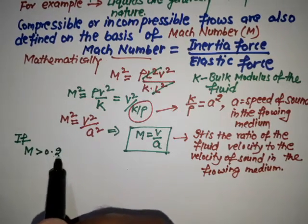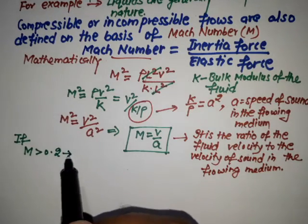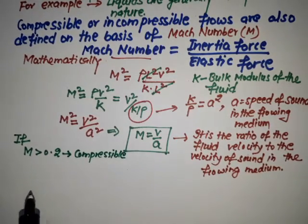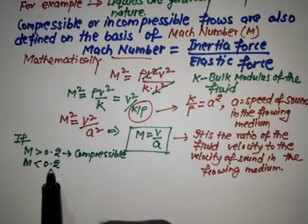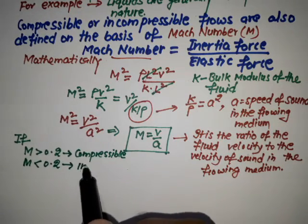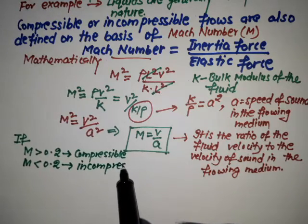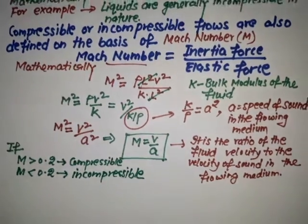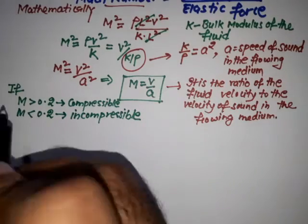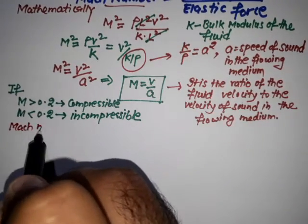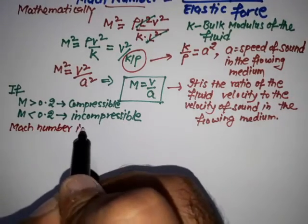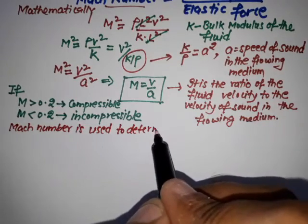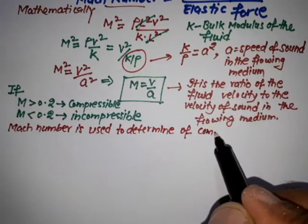Based on Mach number: if M is greater than 0.2, the fluid is considered to be compressible. If M is less than 0.2, the fluid is assumed to be incompressible. This Mach number is used to determine compressibility in a particular gas flow.